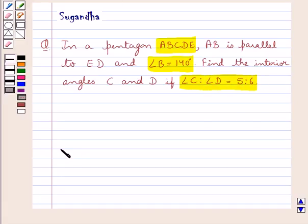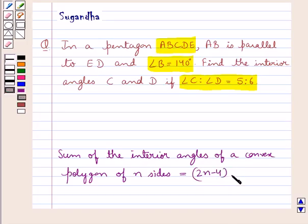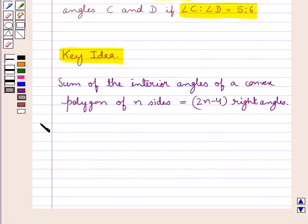We know that the sum of the interior angles of a convex polygon of n sides is equal to 2n minus 4 right angles. This is the key idea that we use in this question. Let's move on to the solution now.